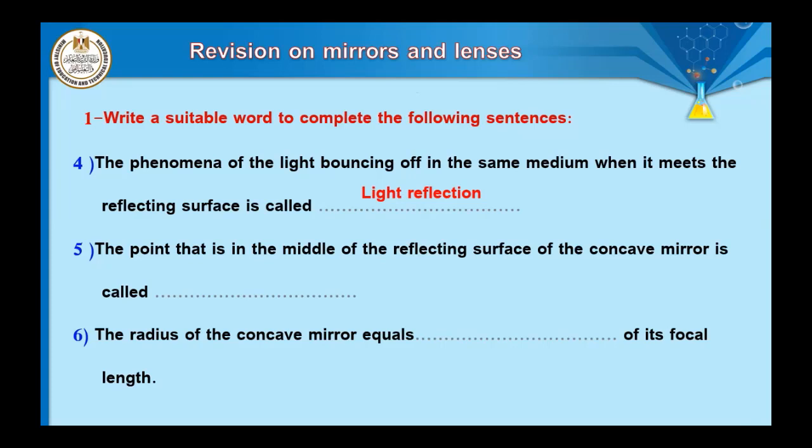Question number five: the point that is in the middle of the reflecting surface of the concave mirror is called ___. This point is called the pole — the pole is the point in the middle of the reflecting surface of a concave or convex mirror. Question number six: the radius of a concave mirror equals ___ of its focal length. The correct answer: the radius equals double its focal length.